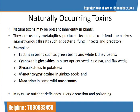Naturally occurring toxins are present in plants naturally and are produced by plants as a defense mechanism to protect themselves from bacteria, fungi, insects, and predators. Examples of naturally occurring toxins include lectins, cyanogenic glycosides, glycoalkaloids, 4-methoxypyridoxine, muscarine, trypsin inhibitors, and solanine. These naturally occurring toxins may result in nutrient deficiency, allergic reactions, or food poisoning.